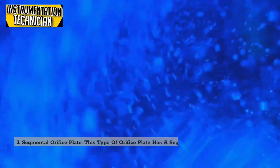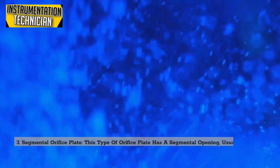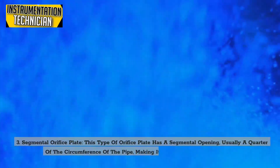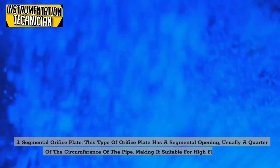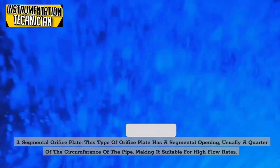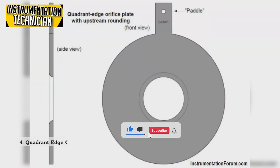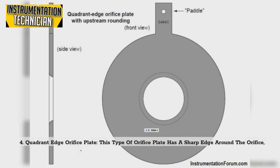3. Segmental orifice plate — this type has a segmental opening, usually a quarter of the circumference of the pipe, making it suitable for high flow rates. 4. Quadrant edge orifice plate — this type has a sharp edge around the orifice, which creates a more accurate measurement.